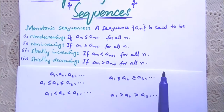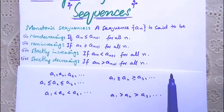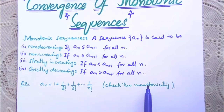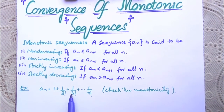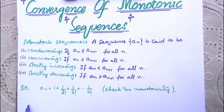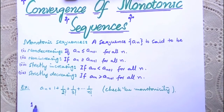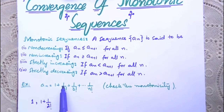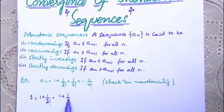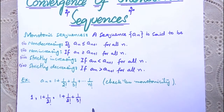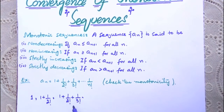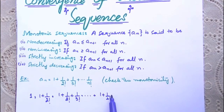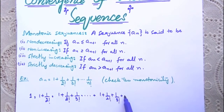Now the question is: how do we check whether a sequence is monotonic — either monotonically increasing or decreasing? Let's see an example. We are given the nth term of the sequence and we have to check its monotonicity. The nth term is: a_n = 1 + 1/2! + 1/3! + ... + 1/n!.